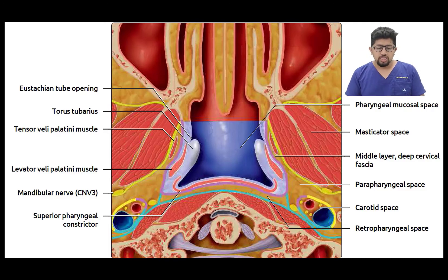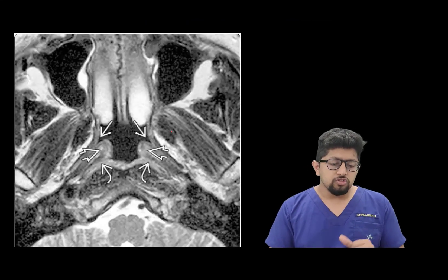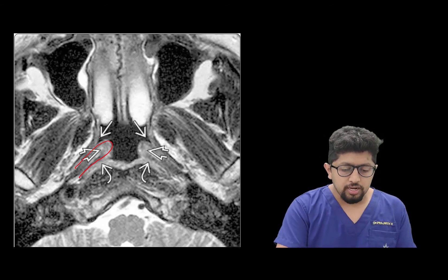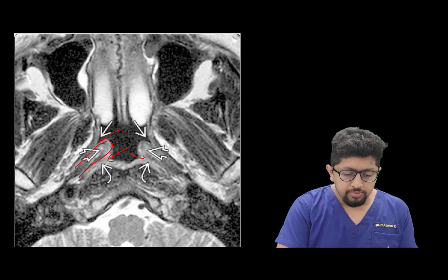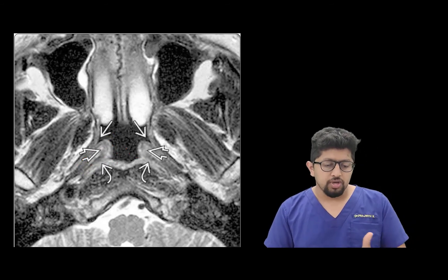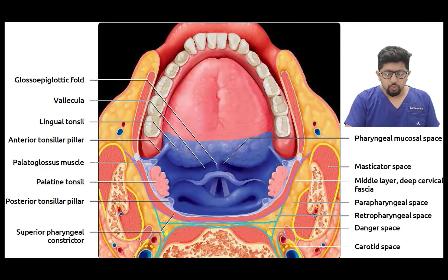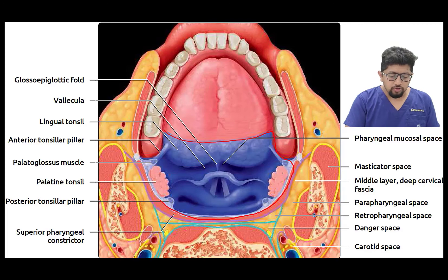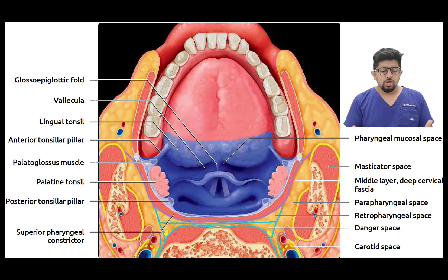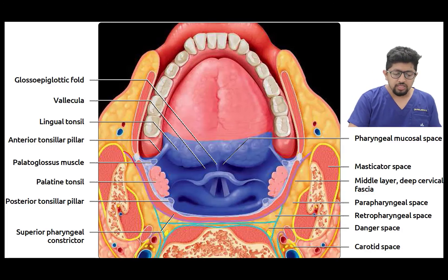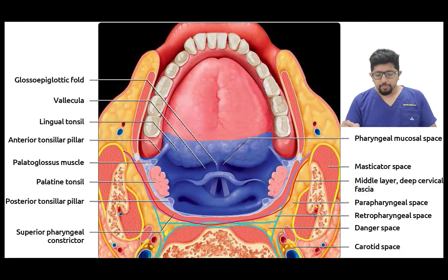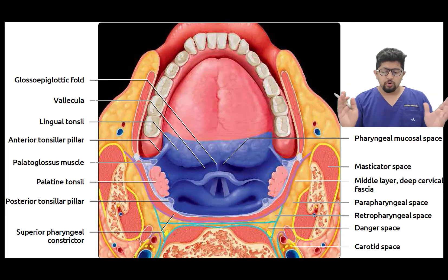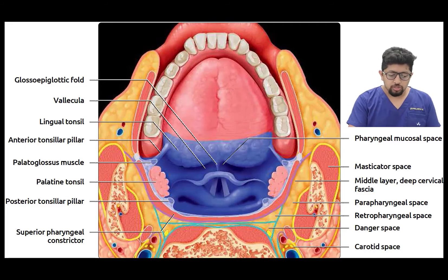On the MRI image, the torus tubarius and the opening of the eustachian tube are visible, along with the collapsed lateral recess. In the oropharynx image, the posterior part of the tongue and the posterior wall of the oropharynx constitute the pharyngeal mucosal space. The middle layer of the deep cervical fascia forms the posterior and posterolateral border of this space.